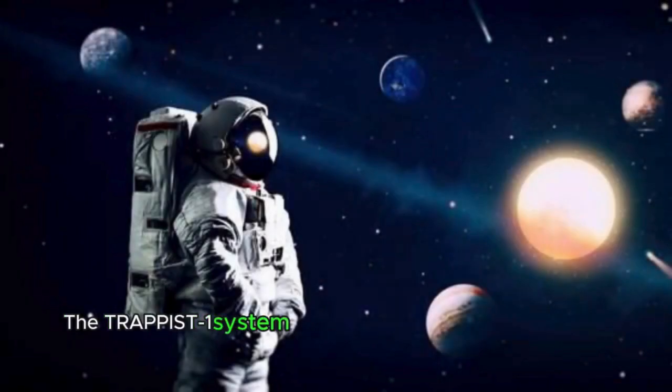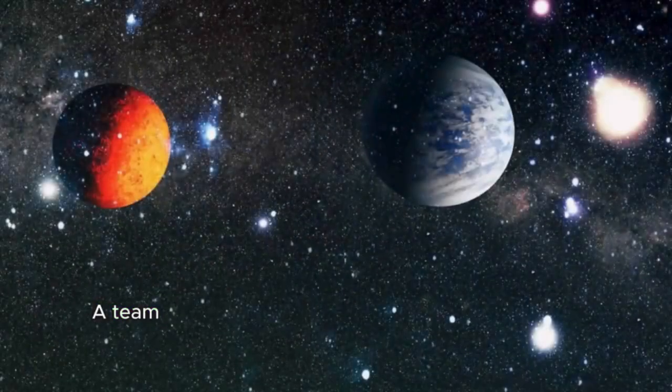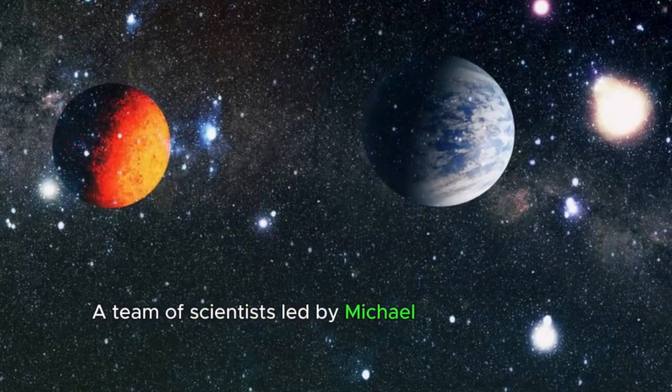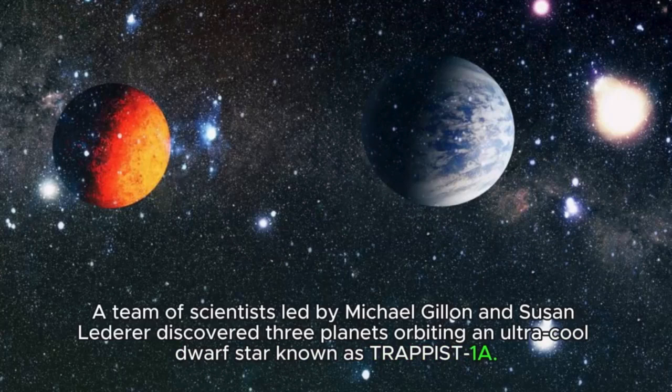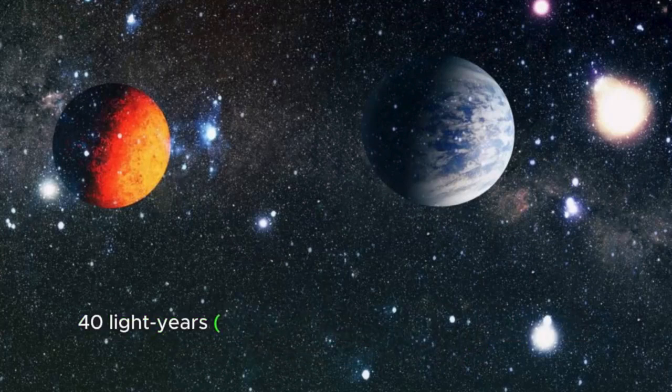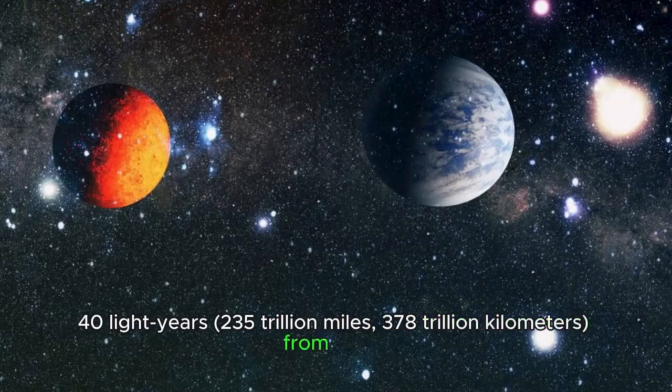The TRAPPIST-1 system was discovered very recently in 2016. A team of scientists led by Michael Gillen and Susan Lederer discovered three planets orbiting an ultra-cool dwarf star known as TRAPPIST-1a, 40 light-years, 235 trillion miles, 378 trillion kilometers from Earth.